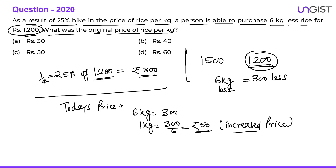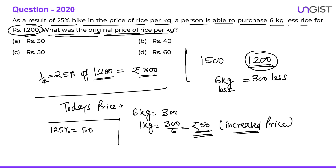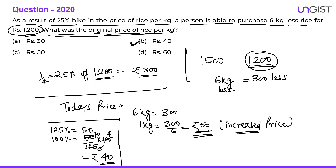They are asking the original price, not today's price. Today's price of ₹50 is actually 125% of the original price, since a 25% hike was applied. So original price = 50 ÷ 125 × 100 = ₹40 per kg. Option B is the correct choice.